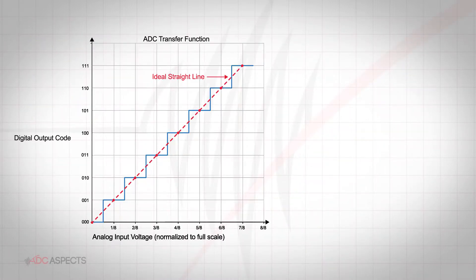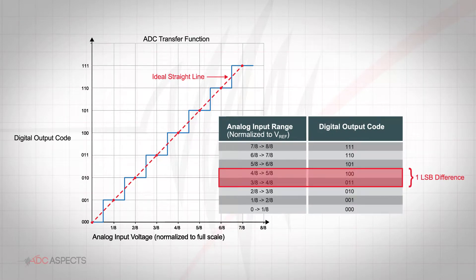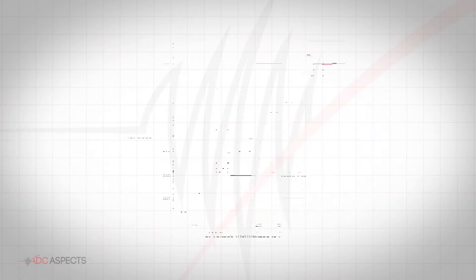Ideally, any two adjacent digital codes correspond to input analog voltages that are exactly one LSB apart. DNL error is the measure of the maximum deviation between actual steps and the ideal steps.